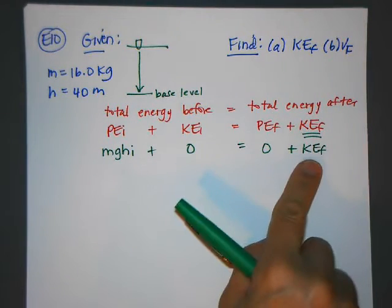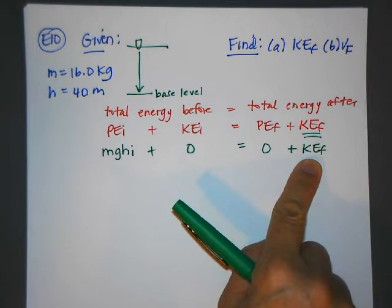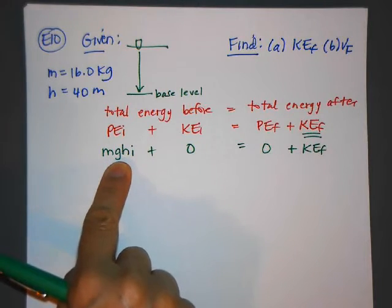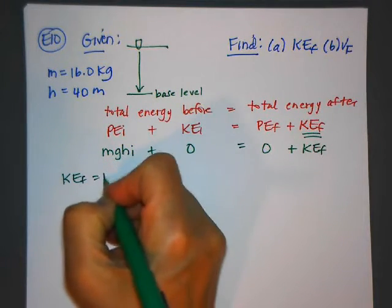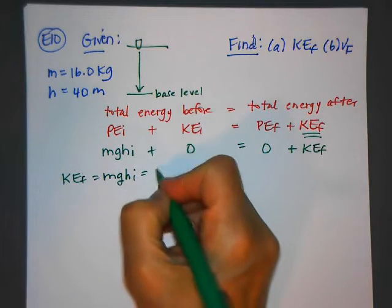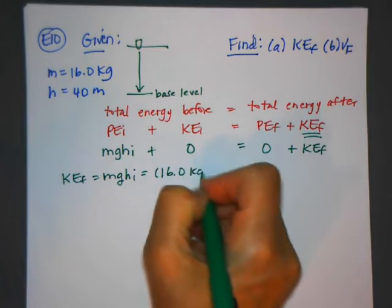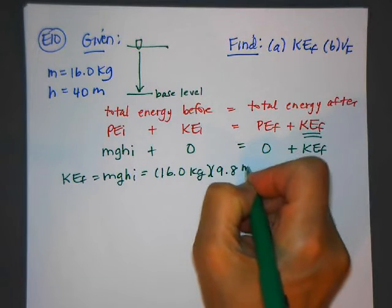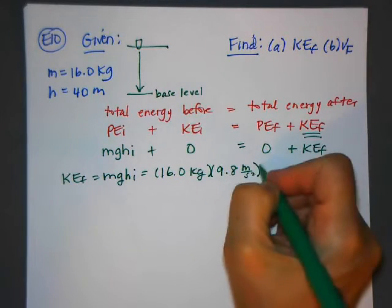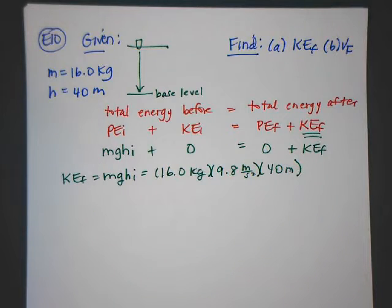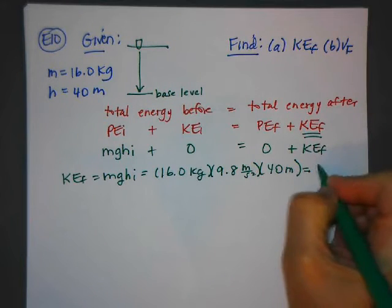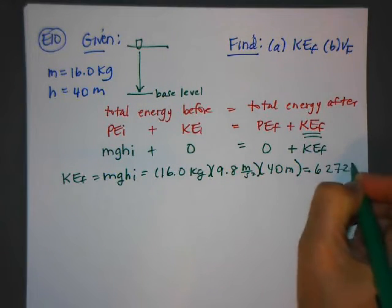So they ask us to solve for the kinetic energy at the bottom, which is equal to the potential at the top. So KEf is equal to mghi, which is going to be the mass times gravity times the height. So when we plug all that into our calculator, we get that the total kinetic energy is 6272 joules.